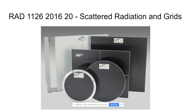Grids come in different sizes, like 10x12 and 14x17, but more importantly they come in different grid ratios, which we'll talk about in a few minutes. The grid ratio tells you how good a particular grid is at cleaning up scatter, because some are better than others. There's a reason not to just use the best one — obviously there's a trade-off. We'll talk about why there are different grid ratios.